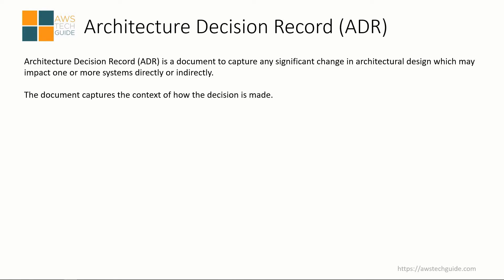ADR is a document which captures all the significant changes in architectural design. The degree of significance can be defined by you in your organization — what you call a significant change. Suppose there is a significant change in your organization's IT architectural design, such as implementing microservices or DevOps practices in a new or existing project. Based on the context, we need to think about the implications, the pros and cons. The document created for this is called Architecture Decision Record.